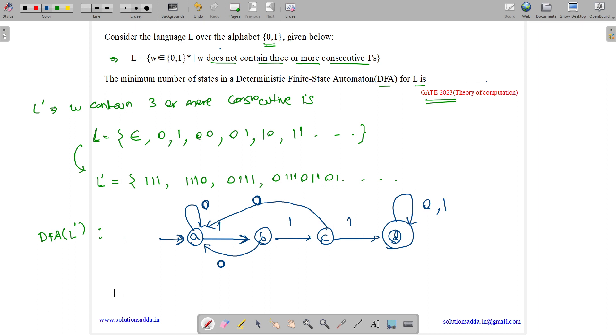How can you convert L complement to L? By interchanging the final and non-final states. We make the final state non-final and the non-final states final. So A becomes a final state, B becomes a final state, C becomes a final state, and D becomes a non-final state.